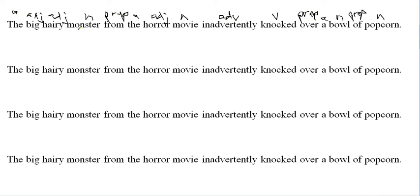We want to do our noun phrases. Remember we look back up at the nouns, and the noun phrase is anything — any adjectives or articles that modify that noun — go with the noun phrase. So we underline them once. We have 'big, hairy, monster.' Then we have 'the horror movie.' 'Bowl' has an article with it, so we have 'a bowl.' And then 'popcorn' is hanging out by itself, so we have 'popcorn.'